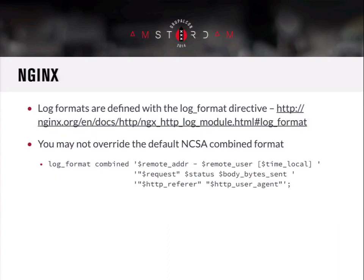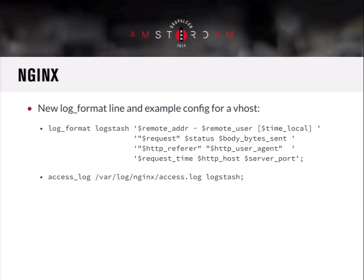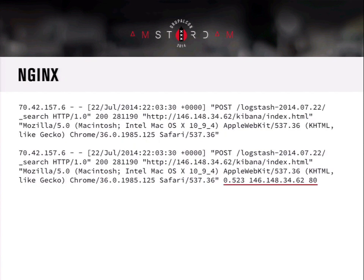Nginx also has the HTTP log module, included in its core. With Nginx you can't override the default format, so if you want your own version you'd have to define a separate one. The default format is actually easier to understand than Apache's. You can also get the same information, though Apache and Nginx see things differently — the request time in Nginx is done in seconds with millisecond resolution, and you can still get the host header and port. You could put in a 'logstash format' if you wanted to track these extra things.